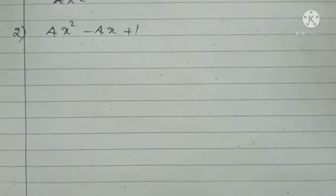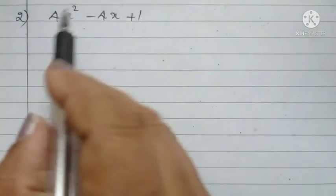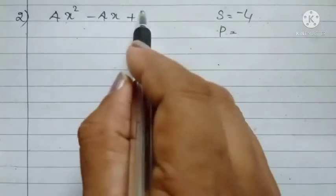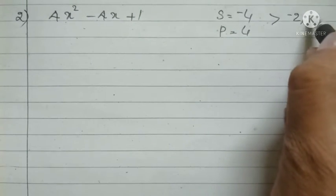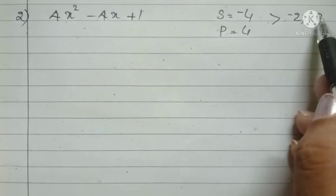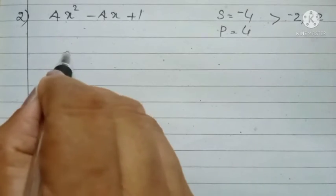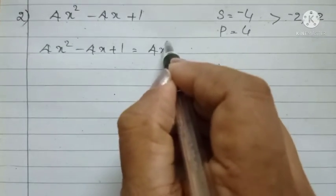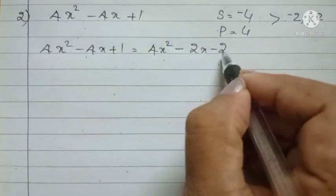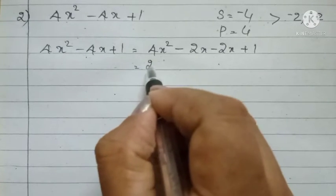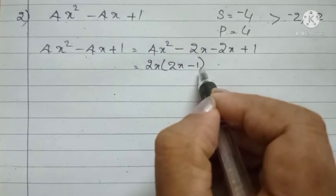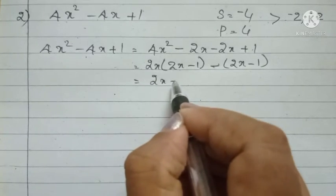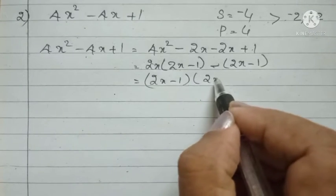Question 2: 4x² - 4x + 1. I am going to split the middle term. I need two numbers whose sum is minus 4 and whose product is 4 × 1 = 4. The numbers are minus 2 and minus 2. So 4x² - 4x + 1 = 4x² - 2x - 2x + 1. Taking 2x common from the first two terms gives 2x(2x - 1), and from the last two terms gives minus 1(2x - 1). Therefore 2x - 1 is common.